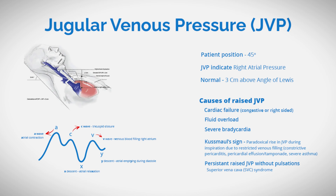Furthermore, a raised JVP without normal pulsations may signify superior vena cava, or SVC, syndrome, typically caused by mediastinal malignancies such as bronchogenic tumors, manifesting as swelling in the head, neck, or arms.